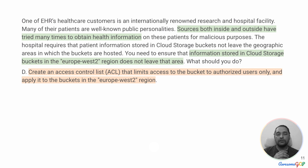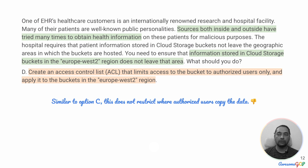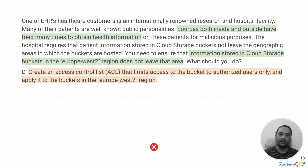Option D suggests creating an access control list (ACL) that limits access to the bucket to authorized users only, applied to the buckets in the Europe West 2 region. This is not very different from option C. Similarly, it does not restrict authorized users from copying the data. If they have access, they can copy it to another storage bucket using gsutil copy with a different destination. So option D is also not suitable and we can eliminate it.